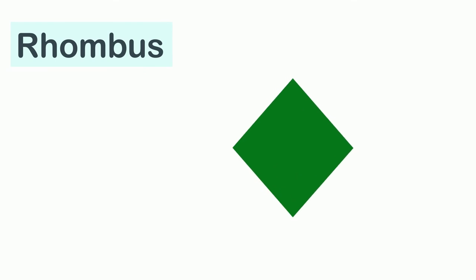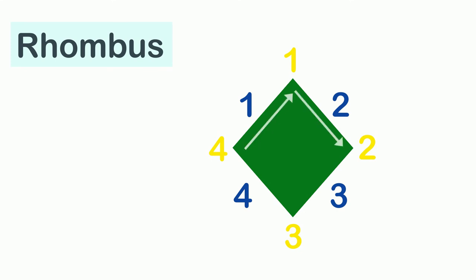This is a rhombus. It also has four sides — one, two, three, and four — and four corners — one, two, three, and four. All of its sides are of equal length. For example, all the sides of this rhombus are five centimeters.